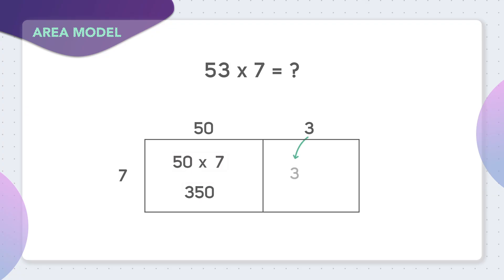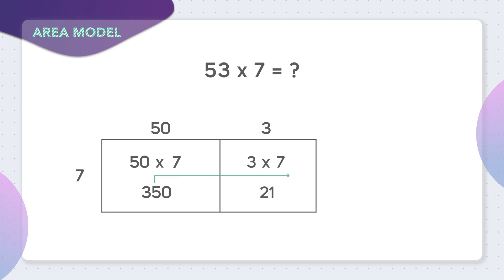In the second box, we're multiplying 3 times 7. Well, 3 times 7 is 21. Next, you needed to add together 350 plus 21.